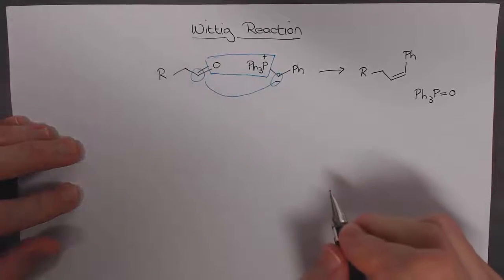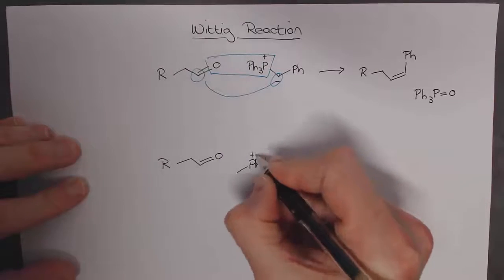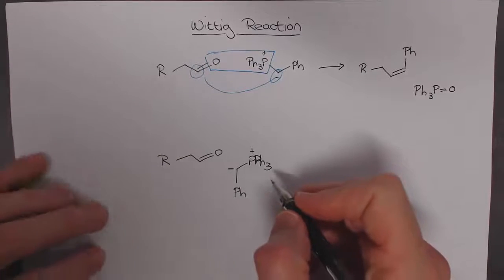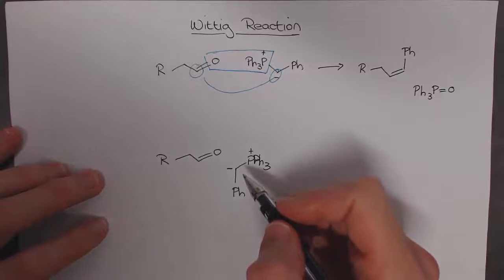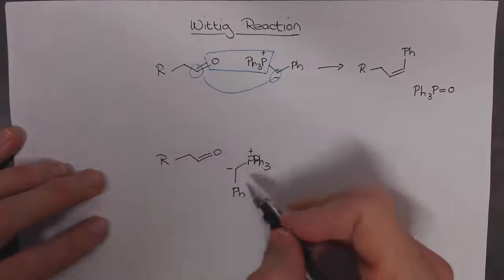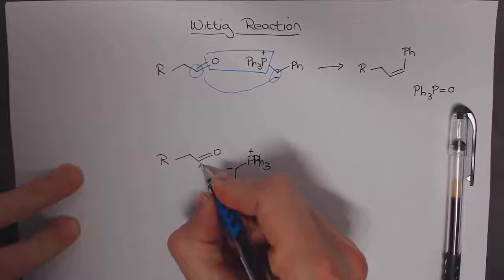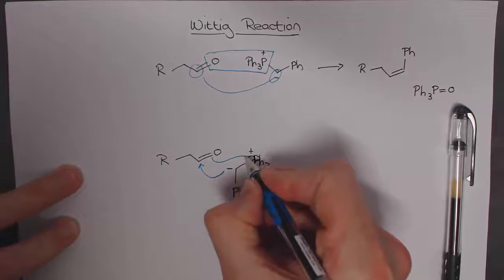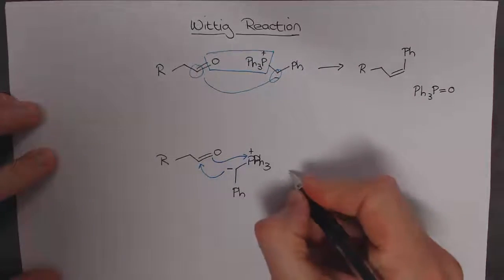In the mechanism of this reaction, it's actually quite important. Since my days of studying, the mechanism has been changed slightly. It's more complicated than originally thought, but the important thing that has been postulated now is that this reaction occurs in a one step process. The negative charge on the carbon attacks the electropositive carbon, and at the same time the oxygen and phosphorus atoms combine to give a four-membered cyclic transition state.